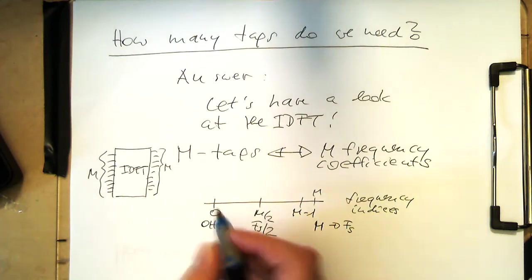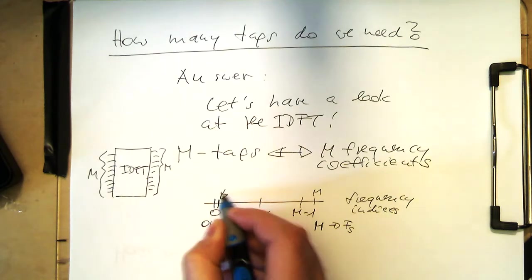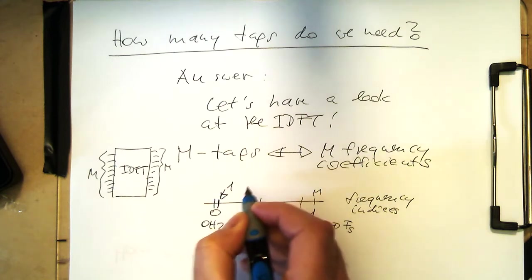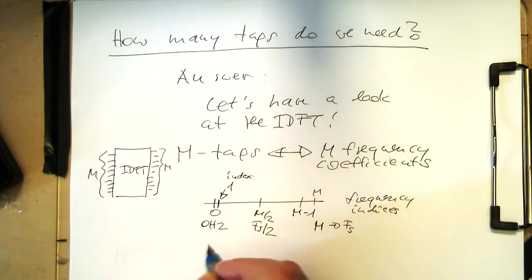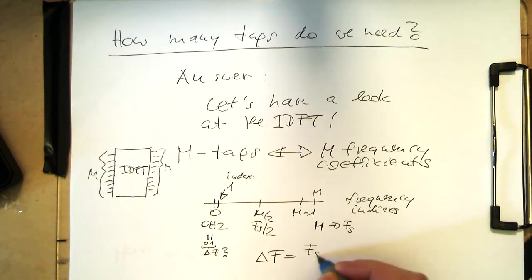And so this means that if we think of the index number one here, then the question is, which frequency is this here? So if we have here index number zero, and there's index number one, which delta f does that represent? And that's obviously very easy. So delta f is then, if you know that the whole axis is fs, then we just divide this by the number of tabs.